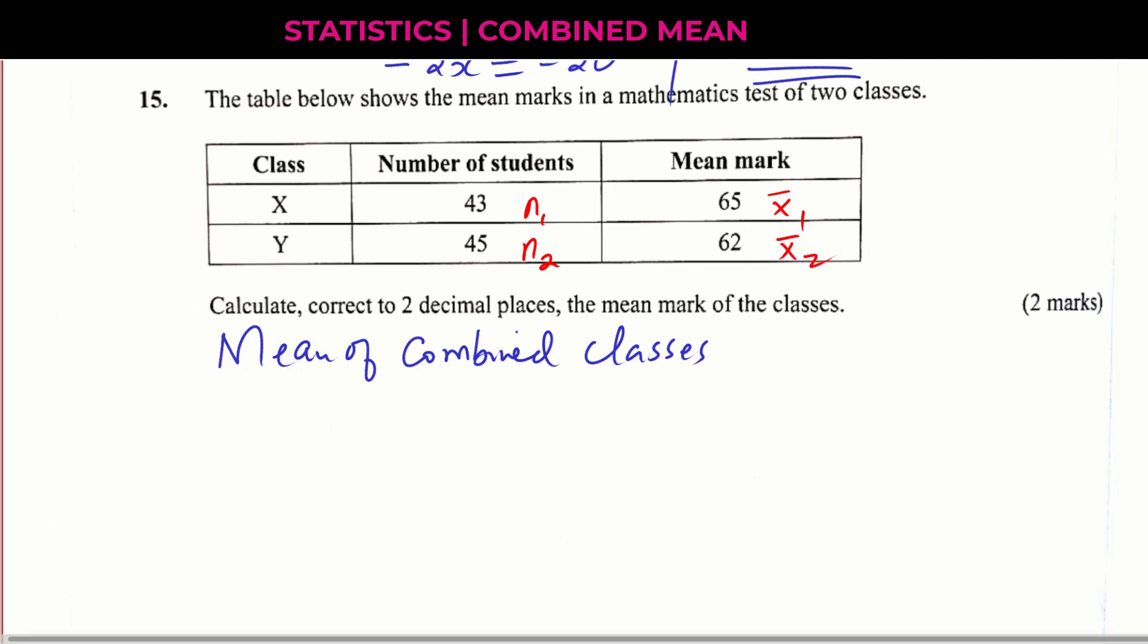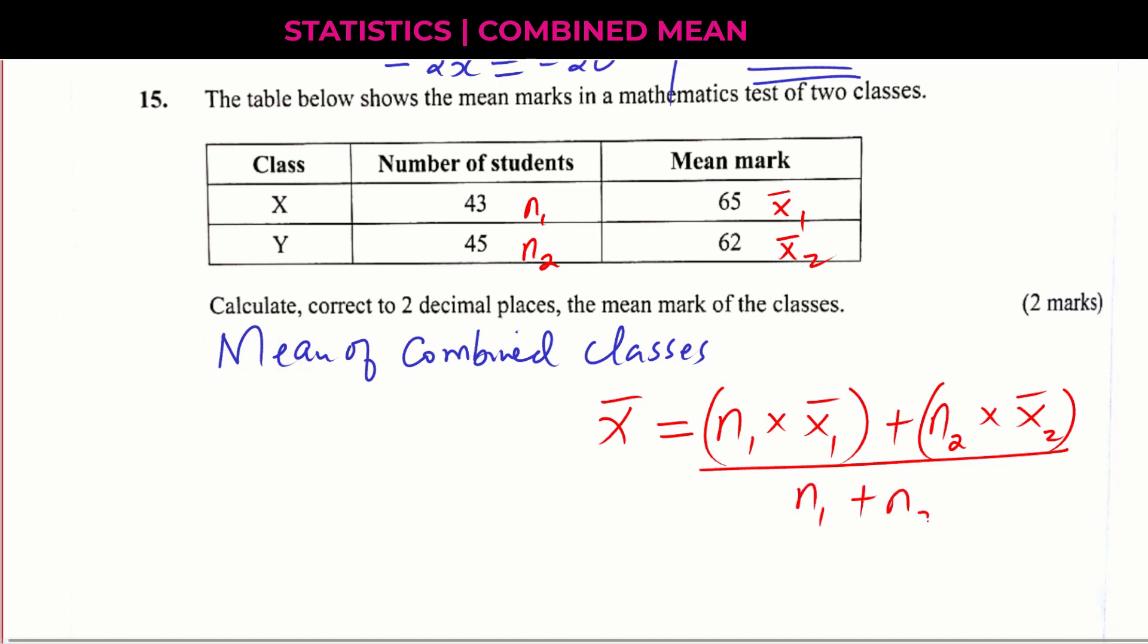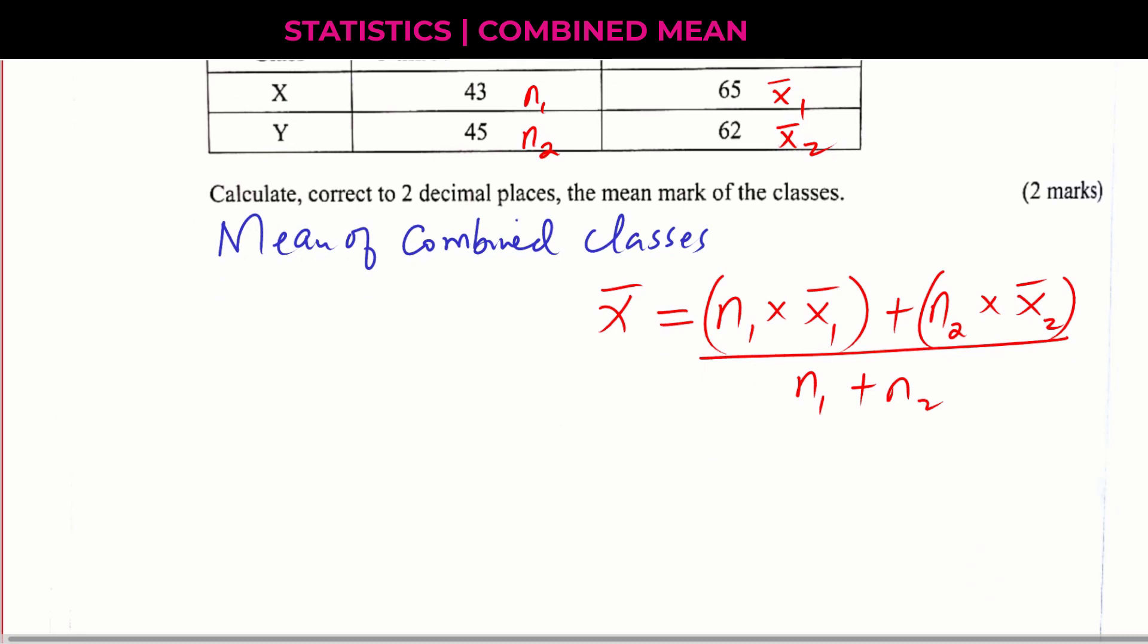Now to get the mean of combined series, in this case, these are the classes. This is the formula that we use. So the mean of the combined classes will be given by N1 times X bar 1 plus N2 times X bar 2 divided by the total number of students in both class X and Y, which is N1 plus N2. This is how we get the mean of combined series.